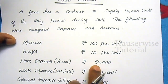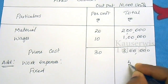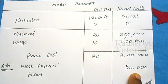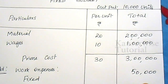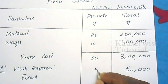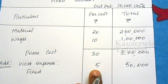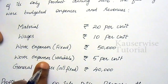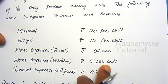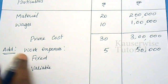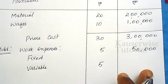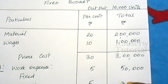Work expense fixed is ₹50,000. To find the per unit cost: ₹50,000 ÷ 10,000 units = ₹5 per unit. Work expense variable is ₹5 per unit as given in the problem; total amount is 5 × 10,000 = ₹50,000.